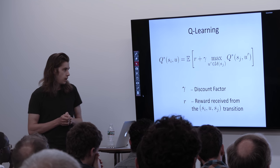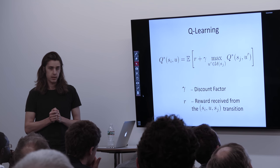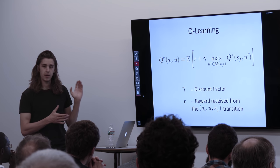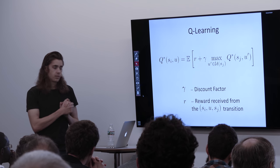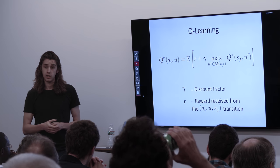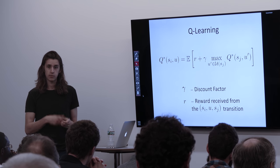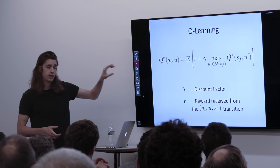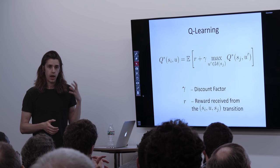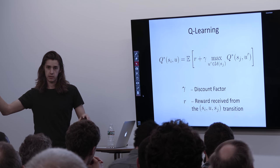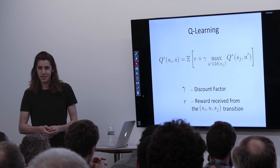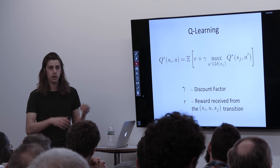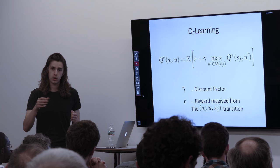The discount factor is mathematically necessary — it keeps the Q-learning algorithm as a Lipschitz contraction. Intuitively, consider a stock trading agent: without the discount factor, it could learn to buy stock and hold for a billion years. The discount factor discounts future rewards and emphasizes shorter-term rewards. The alpha parameter (learning rate) was set to 0.01; for theoretical convergence you should anneal it, but theoretical convergence only happens with infinite samples anyway.